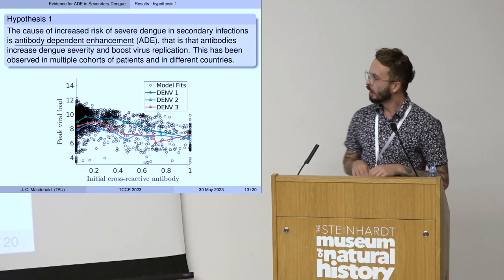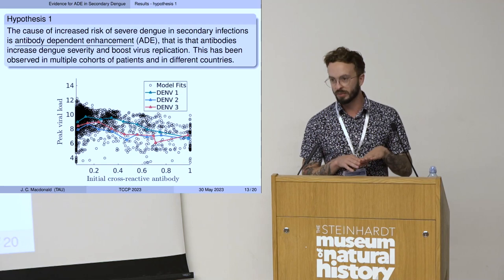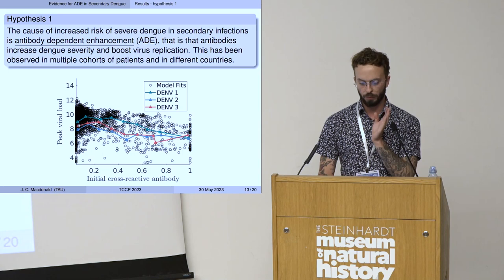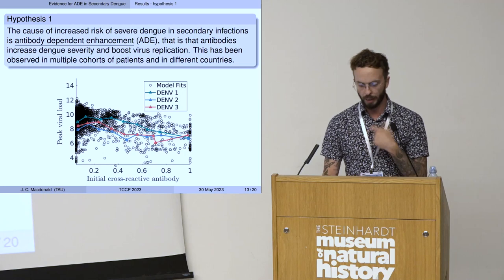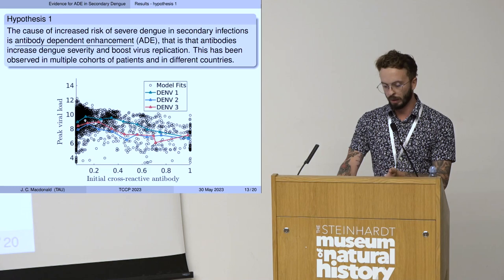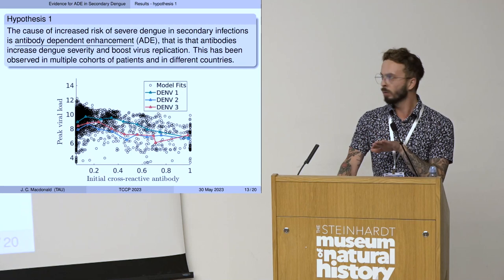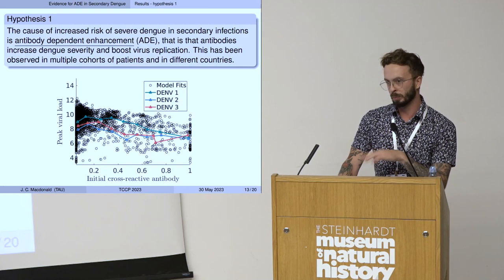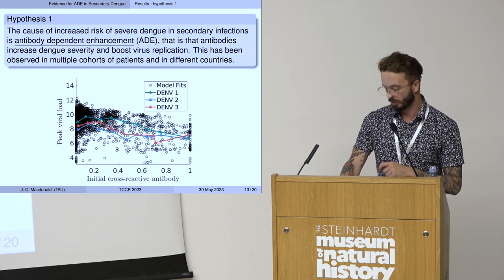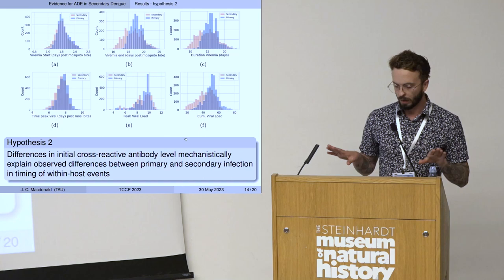Coming back to hypothesis one: because we're doing this random matching there's a lot of noise in the data, but for each of the three serotypes, if you plot the median — blocking the data and plotting the median of values at each initial cross-reactive antibody level against peak viral load, which is strongly correlated with infection severity — you do see this region between about 0.15 and 0.3 normalized micrograms per milliliter where there is an increase in peak viral load, followed by a gradual decrease.